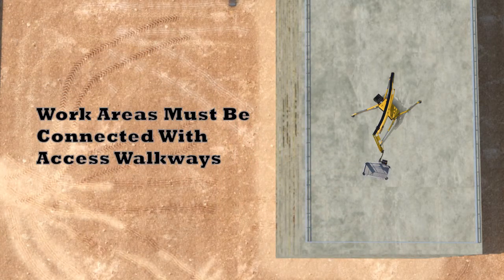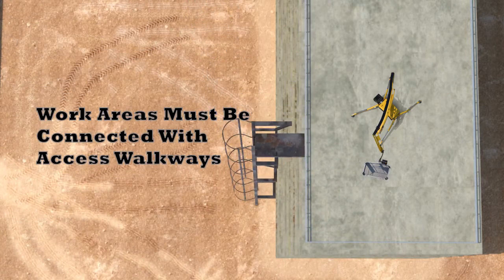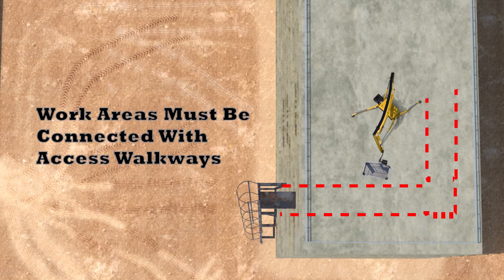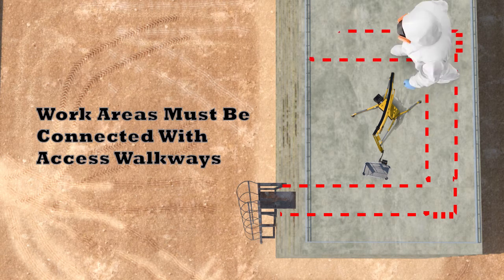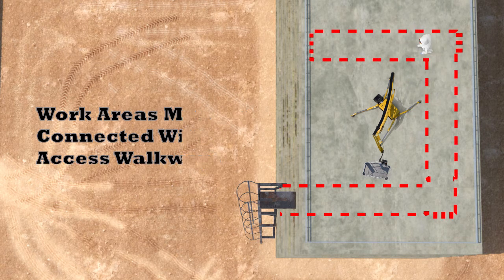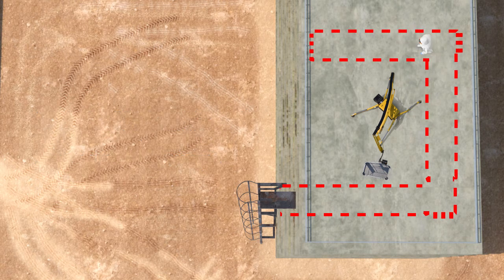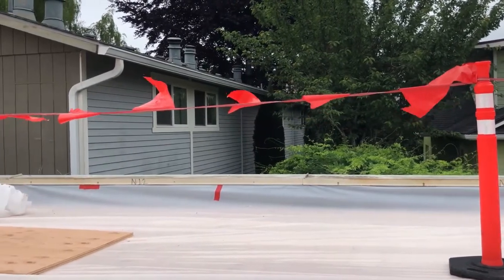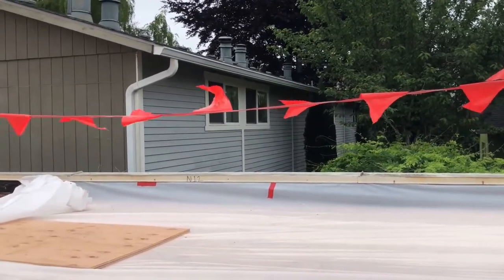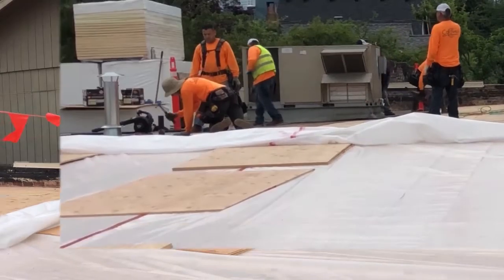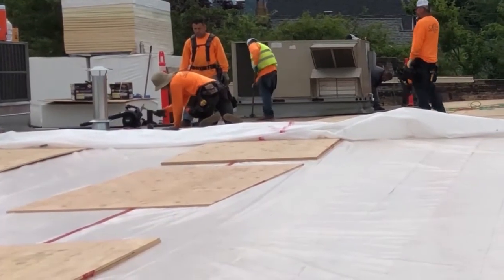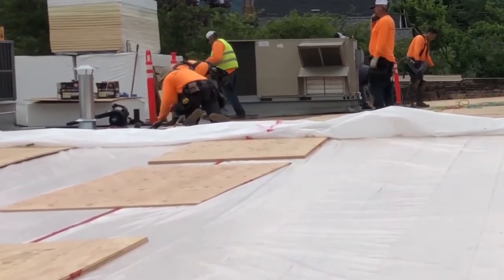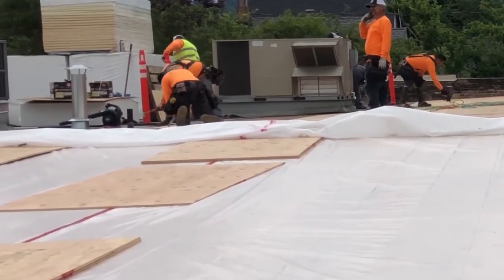Points of access, material handling areas, storage areas, and hoisting areas must be connected to the work area by an access path of two warning lines. The warning lines must be flagged at no more than six-foot intervals. Employees may not cross the warning line unless a worker is performing roofing work in the area.